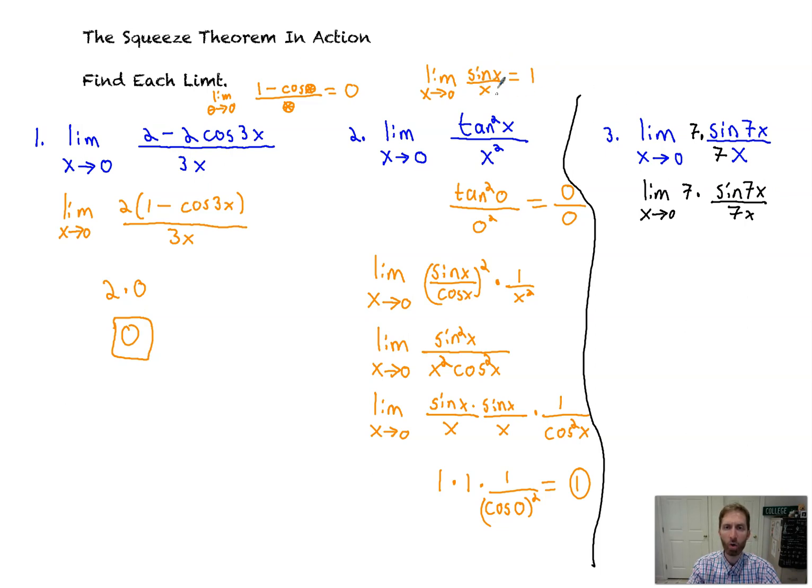This right here matches this perfectly. It's the sine of an angle over that same value. Sine of an angle over the same value. So this whole thing goes to one, and then we're left with seven, which is equal to seven. That's awesome right there. Pure manipulation. How we would know to multiply by seven is because we want it there to make sure the angles match up. Sorry, the angle and the denominator match up. That's it.